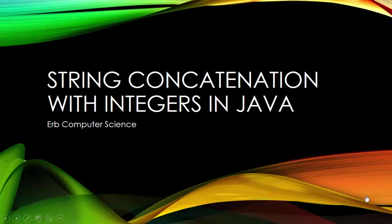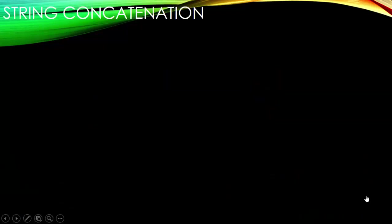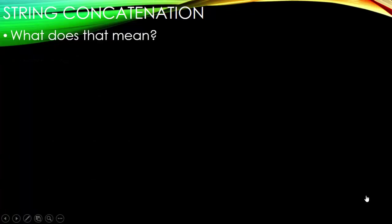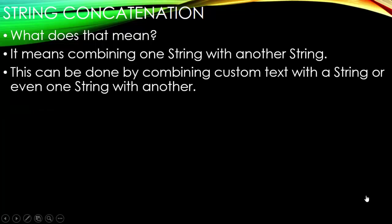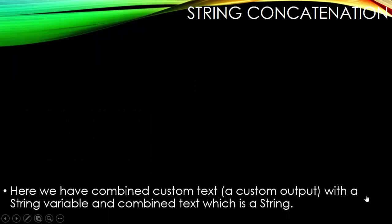In this video, we're going to take a look at string concatenation in Java, but go one step further and introduce integers into the mix. String concatenation means combining one string with another string. This can be done by combining custom text with a string or even one string with another. Let's take a look at an example so we can see how string concatenation works.